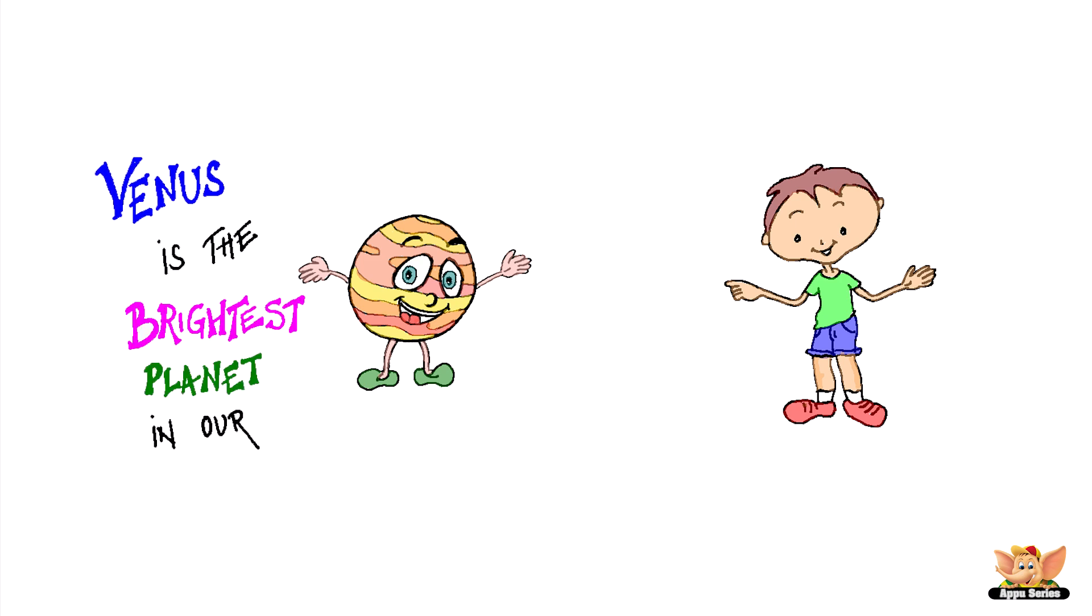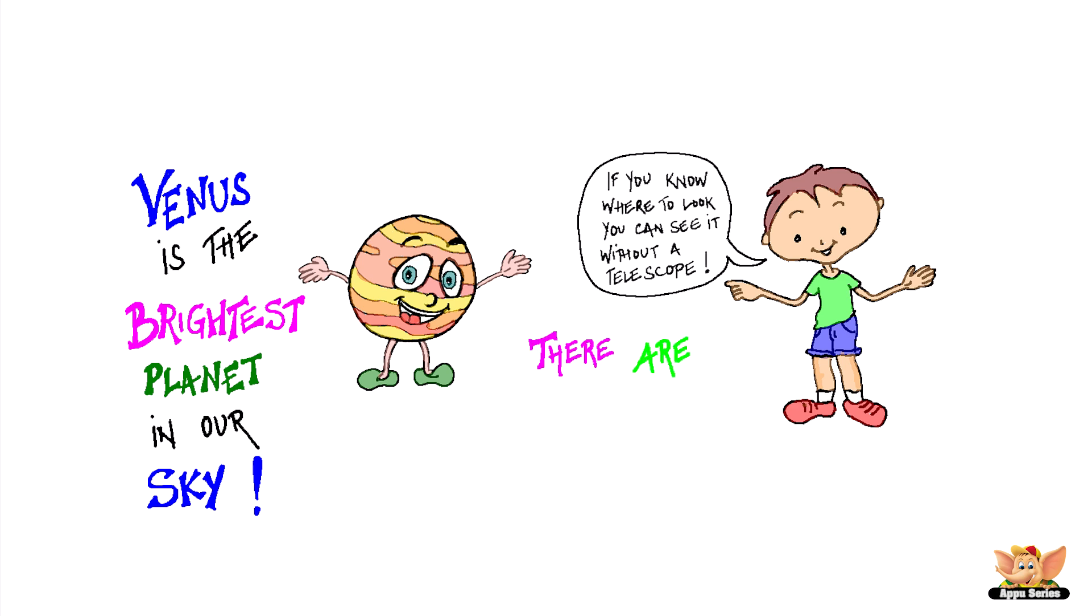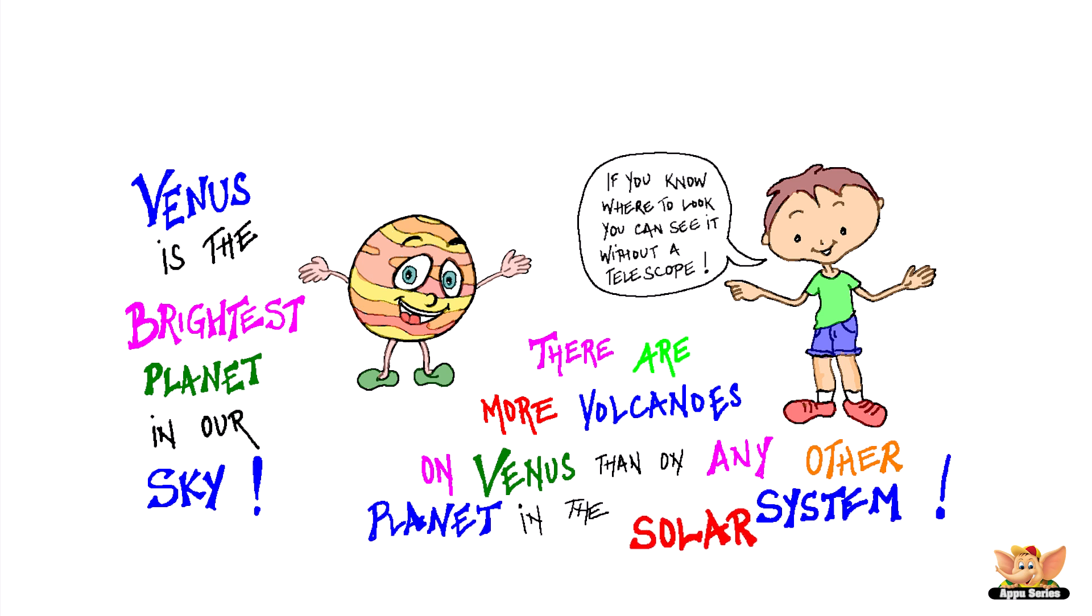Venus is the brightest planet in our sky. If you know where to look, you can see it without a telescope. There are more volcanoes on Venus than on any other planet in the solar system.